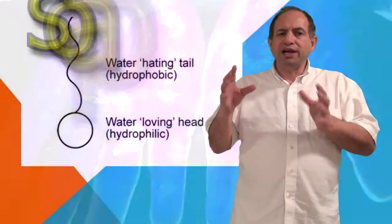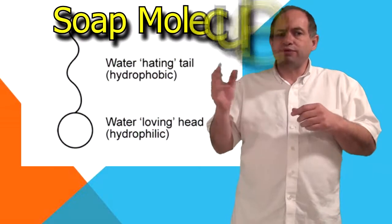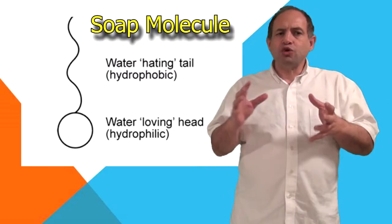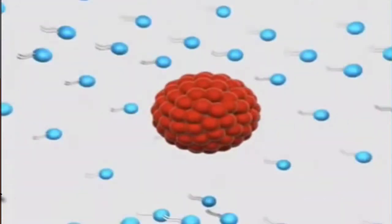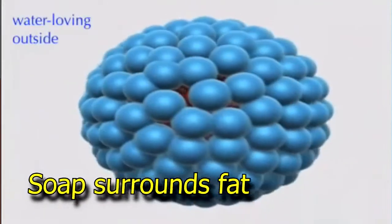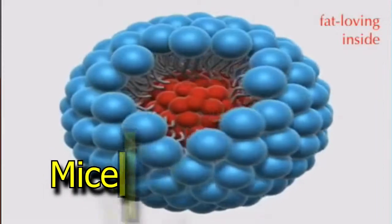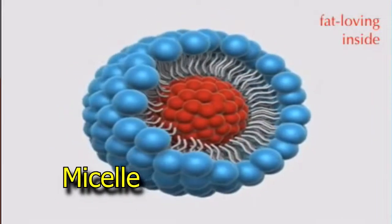Soap molecules have one end that loves water or is hydrophilic and another end that loves fat or is lipophilic. The soap forms tiny spheres called micelles. The water loving end on the outside and the fat loving on the inside, the fat loving ends encapsulate the tiny drops of oil so water can wash it away.